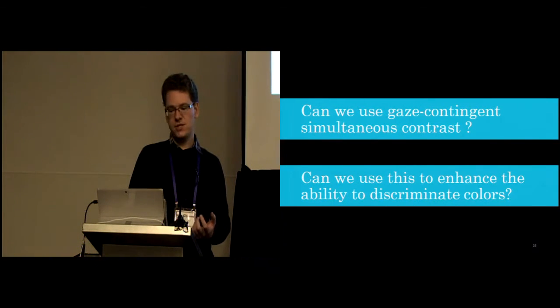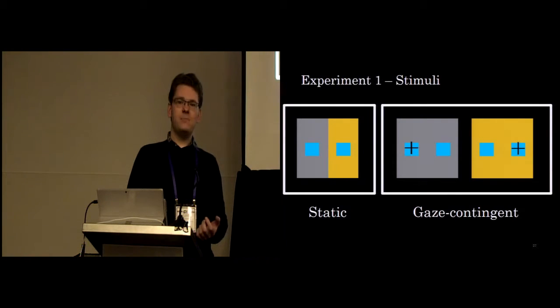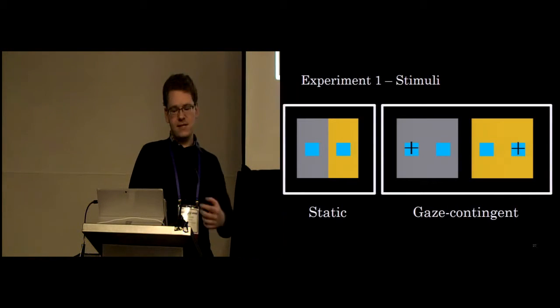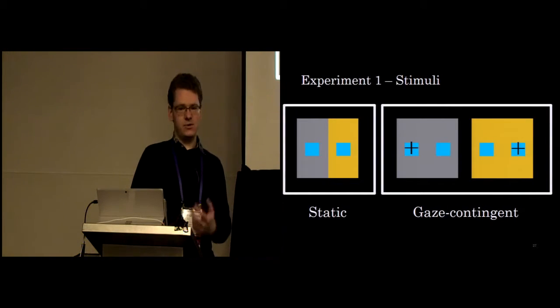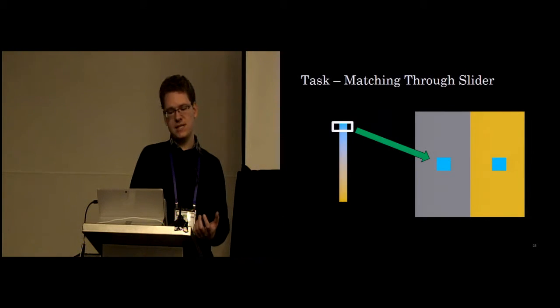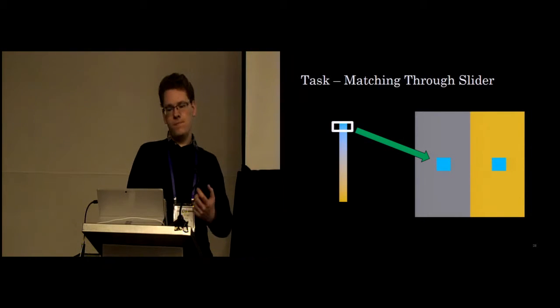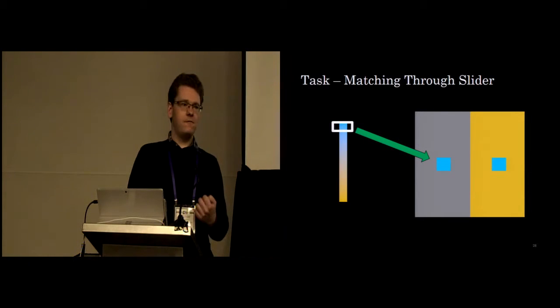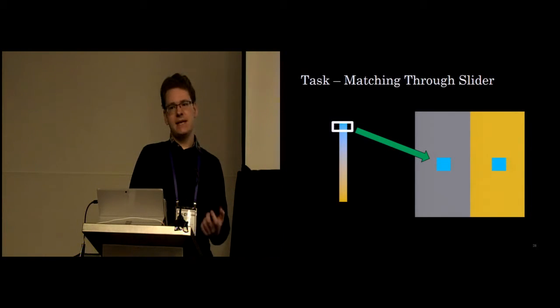So to answer the first question, we designed an experiment. In the first experiment, we had this kind of arrangement, as you saw before. We have two color patches, and we have two main conditions, a static condition and a gaze-contingent condition. In the static condition, we have the two different areas around each patch. And in the gaze-contingent condition, we have a global surround that changes depending on where you're looking. We then asked our participants to change the color of the left patch using a slider device, to change it in a way that it matches the other color. That way, we could figure out if the color appearance changes, they would indicate a different color.